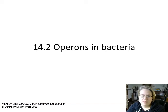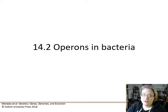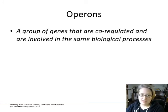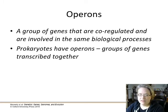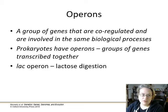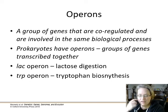Next we're going to look at operons in bacteria, notably the lac and trp operons. An operon is a group of genes that are co-regulated and involved in the same biological processes. There are a whole bunch of genes stacked together on DNA — prokaryotes have these — and they get transcribed together in a long polycistronic messenger RNA. The two key ones are the lac operon, which is how bacteria digest lactose, and the trp operon.